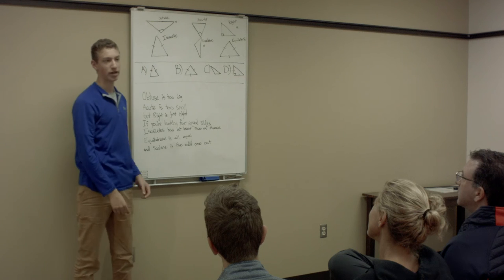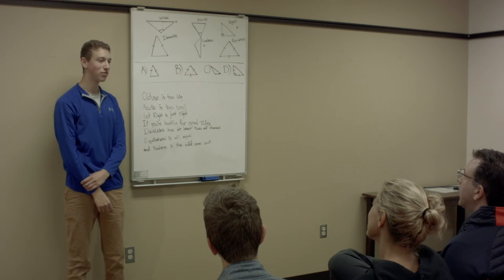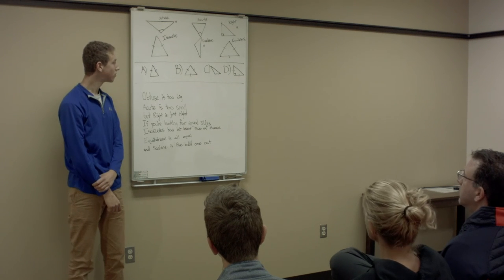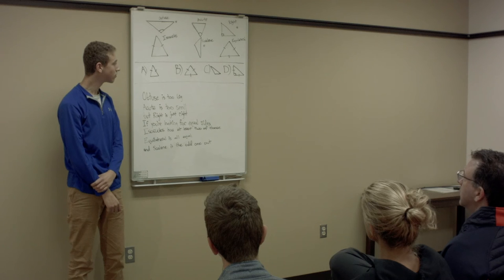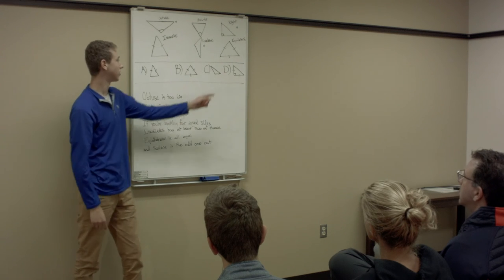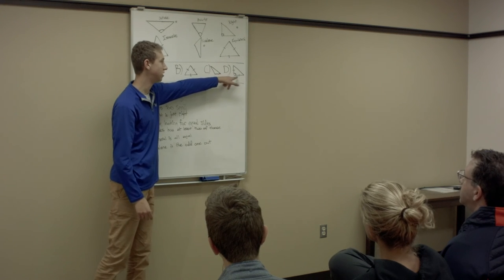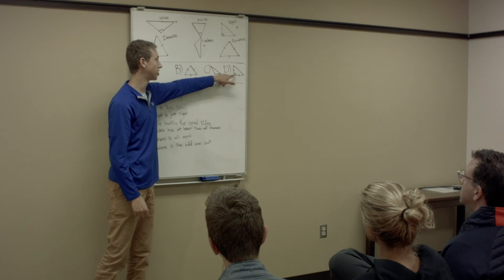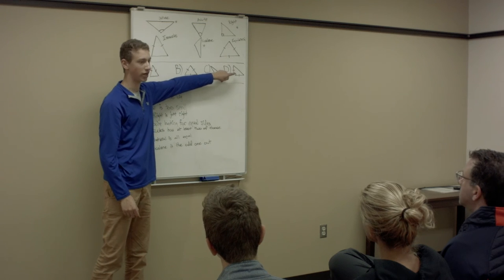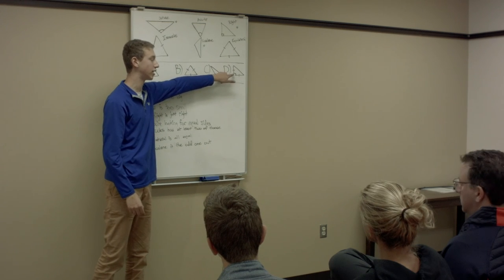And finally, problem D. Bob? I think it's a right triangle and isosceles. Perfect. So it's isosceles because there are two equal sides, and it's a right triangle because there's a right angle that's 90 degrees right there.